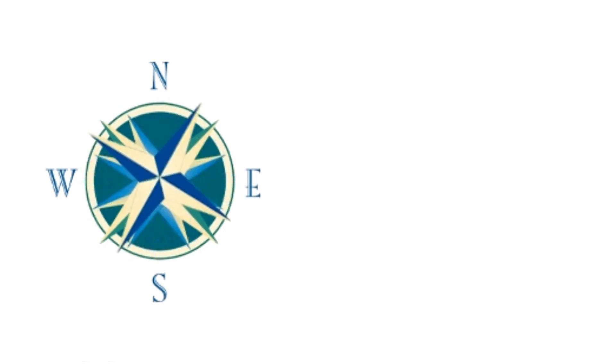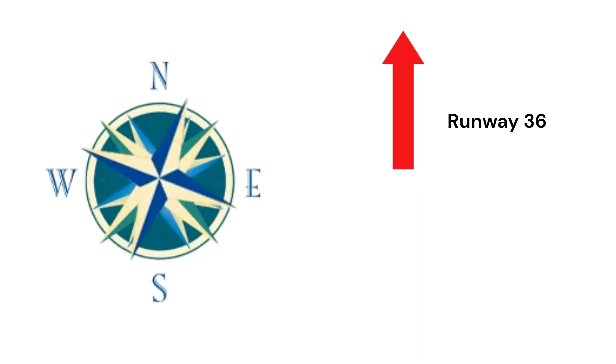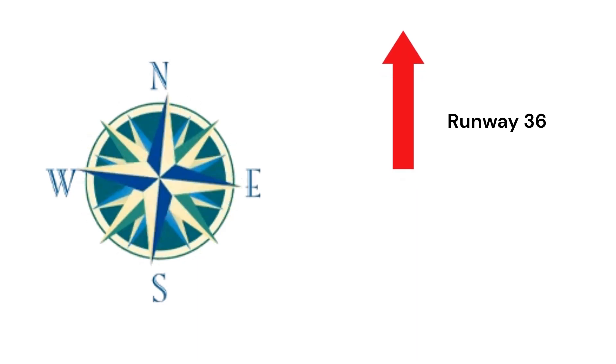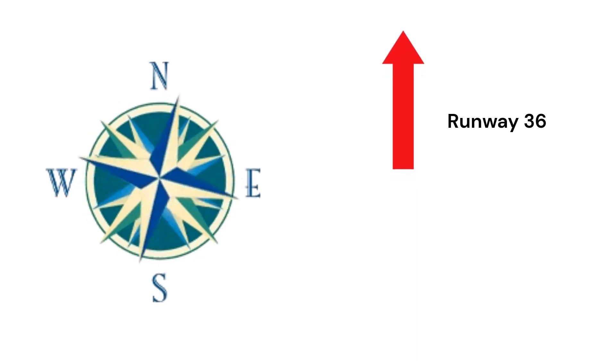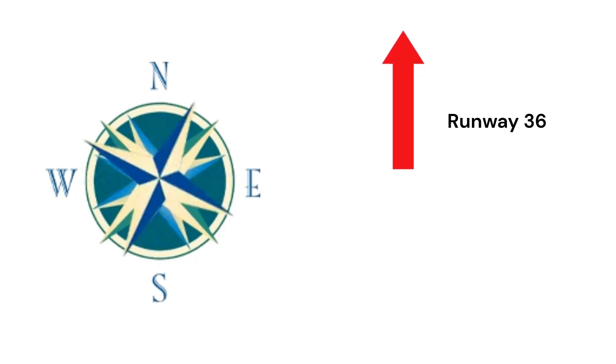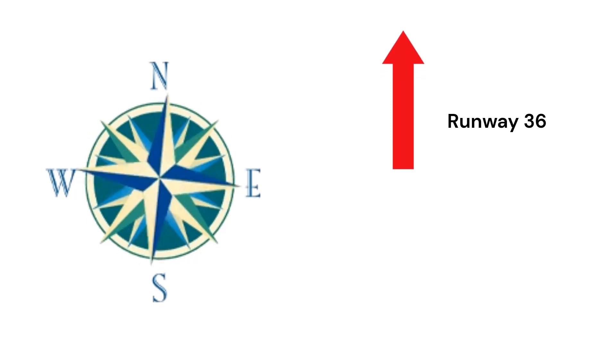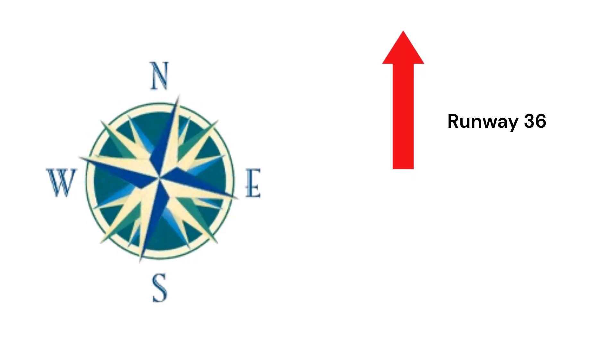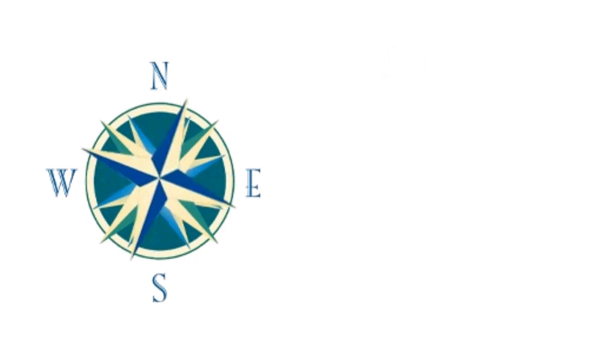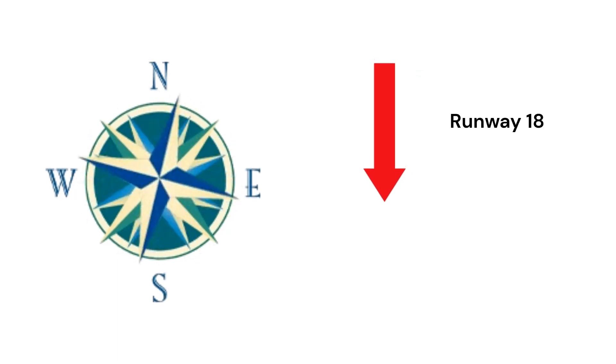Runway numbers are determined by the magnetic approach course to the runway with the last digit removed. For example, a runway facing due north would have a runway number of 3-6, since 360 degrees is the magnetic heading for due north. Therefore, a runway pointing due south would have a runway number of 1-8.